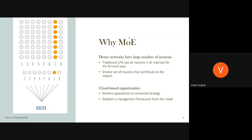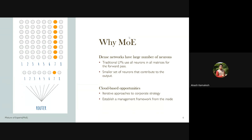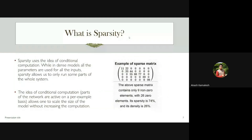The router is the key differentiator here. In a normal neural network, different neurons get activated automatically. But here, you're doing router-based management as well. Your normal neural network is nothing but a dense network — the router adds explicit control over which expert processes each token.